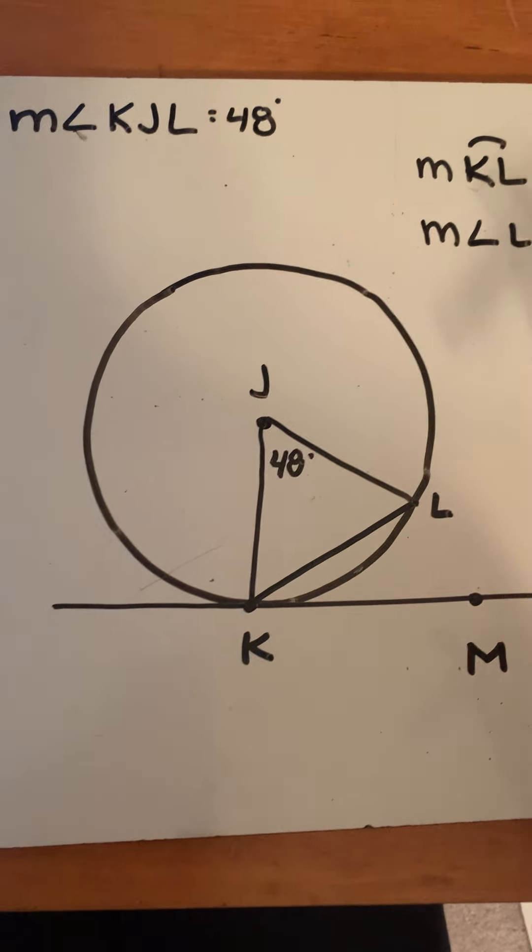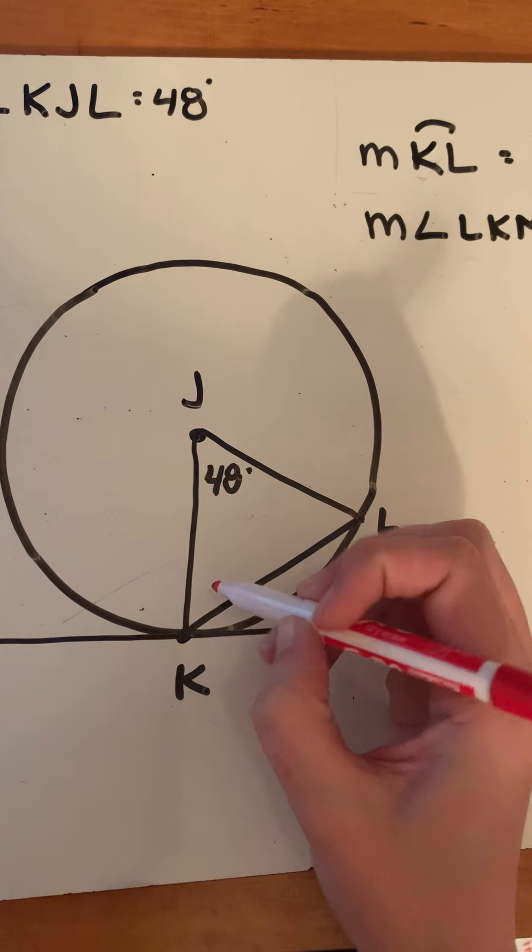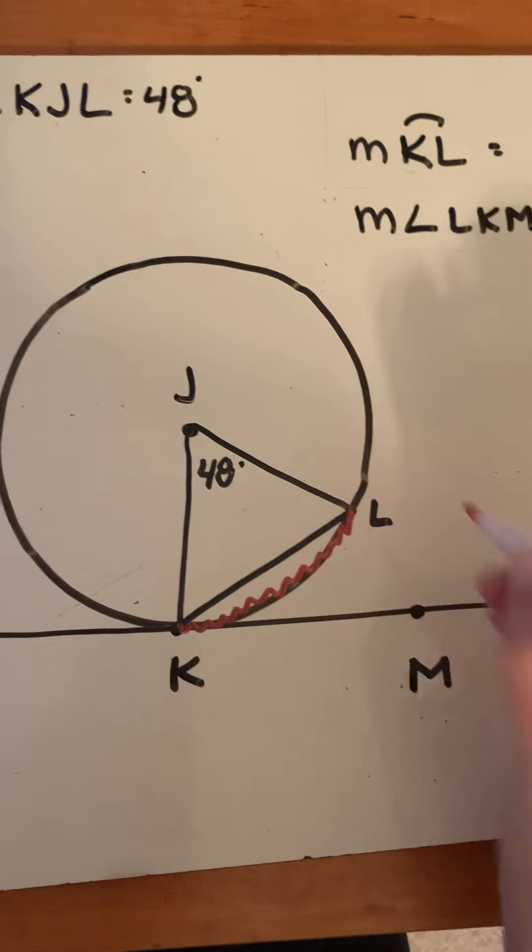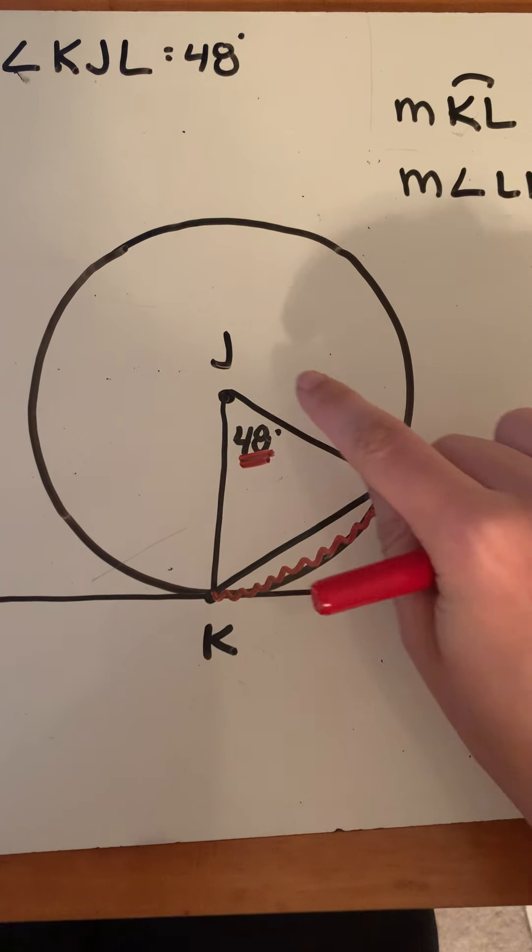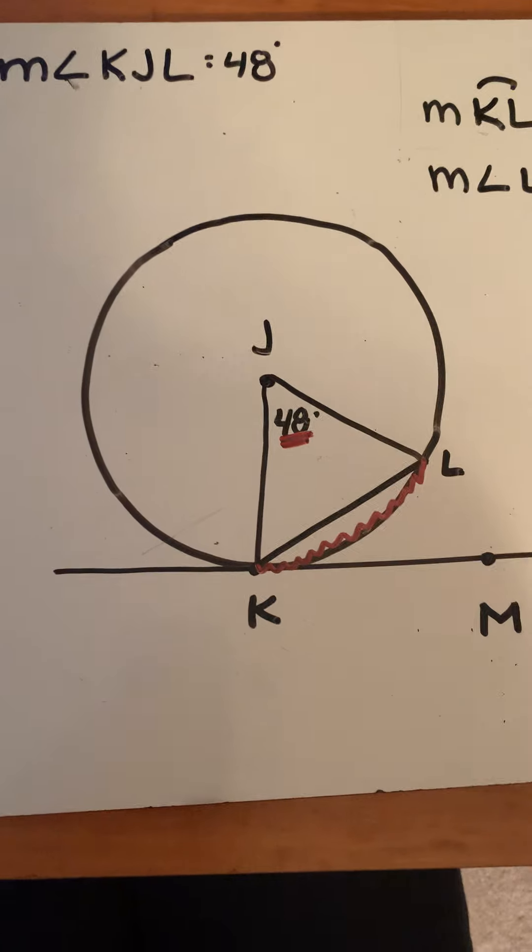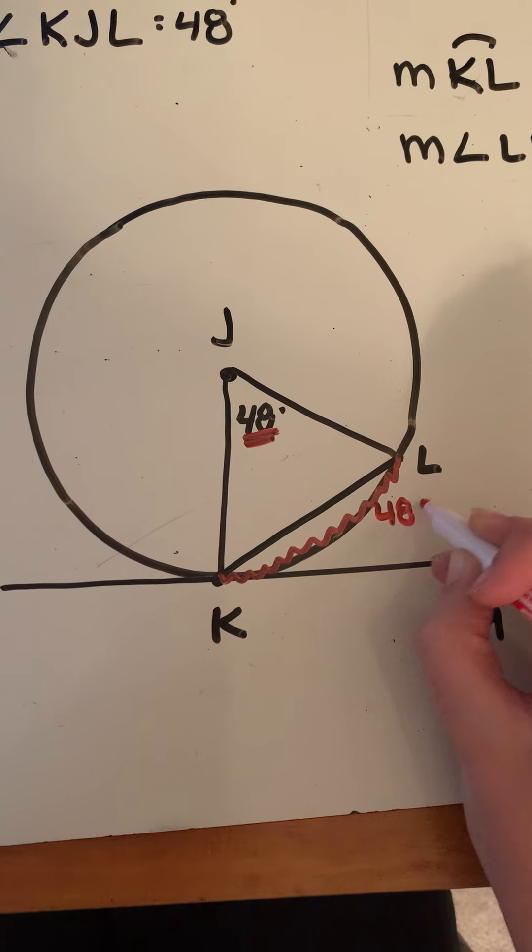Let's see what the first problem is. It says find the measurement of arc KL. We're trying to figure out how many degrees the arc from K to L is. They only gave us 48 degrees, so we have to use this. Remember: how does the central angle relate to its arc? They're the same. So that means this arc is 48 degrees.